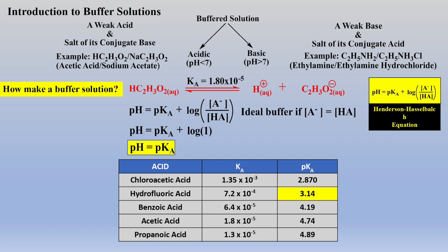For example, if one needs to make a buffer solution close to 3.1, then the weak acid hydrofluoric acid and a near equimolar amount of sodium fluoride would be the best choice. Or if one wanted to make a buffer solution at pH 4.9, then propanoic acid and a near equimolar amount of sodium propanoate would be the best choice. Simply decrease or increase the amount of salt to be weighed to fine tune the ratio for the desired pH, as demonstrated in the previous example problem.